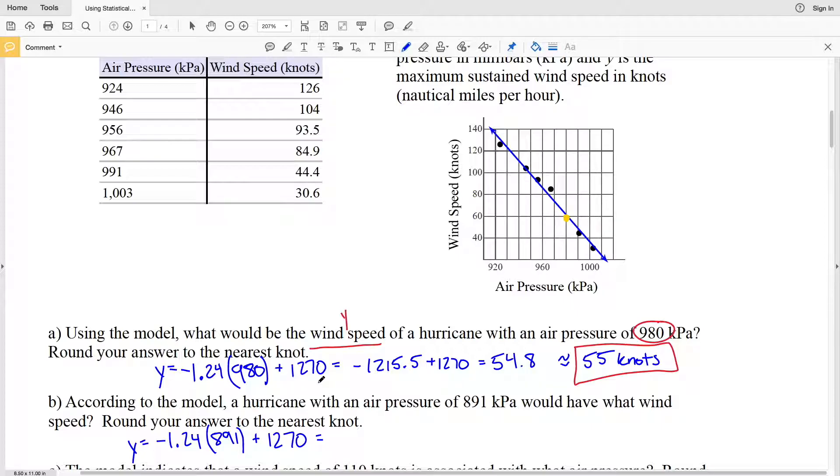Negative 1.24 times 891 equals negative 1104.84, and we're adding 1270. When we do so, we'll get 165.16. However, we need to round that to the nearest knot, so the nearest whole number, which will round down to 165.